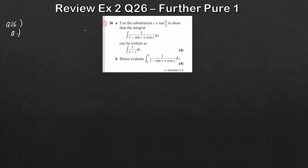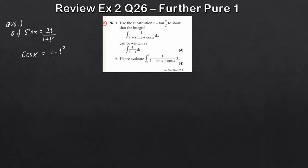For Question 26a, the first thing we need to write down for any of these questions is the trig functions we've got. In this question we have sin x and cos x, so I'm going to get the t-substitutions for both. Remember, sin x is just 2t divided by (1 + t²).